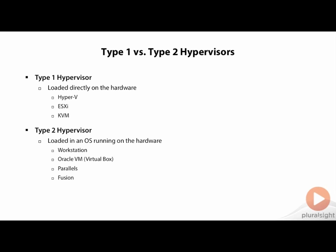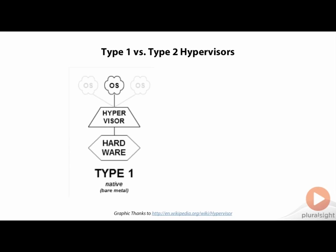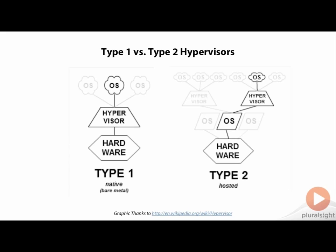Now let's look at a graphic that compares type 1 versus type 2 hypervisors. With a type 1, or native bare-metal hypervisor as it's sometimes called, these are loaded directly on the physical server hardware. You then create virtual machines which contain guest operating systems and applications on top of the hypervisor at the highest level.